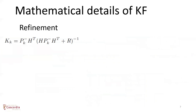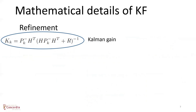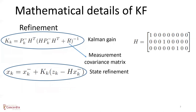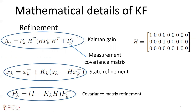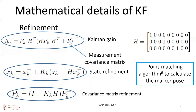After the prediction step comes the refinement step. The first task is to calculate the Kalman gain. Once the Kalman gain is calculated, the real measurement is taken into account to refine the prediction for the current state. Similarly, the Kalman gain is incorporated to refine the prediction for the current state covariance matrix. Once the position measurements are refined, a point matching algorithm is applied to calculate the marker pose in terms of a rotation vector and a translation vector.